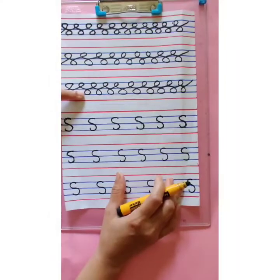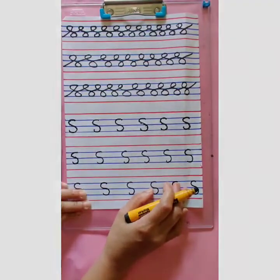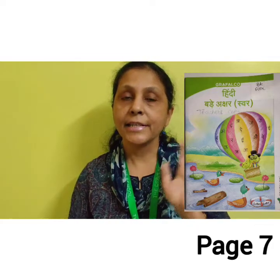Complete the first half with the first pattern and the second half with the second pattern. Hope you all have understood both the patterns well. Now it's time for home assignment. Children, open your Hindi Grafal ko Swar book, page number 7. Complete the page as per the instructions given. Don't forget to write the date. Complete your work neatly. Bye, see you.